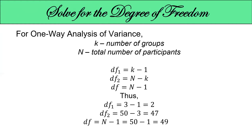In solving for the degrees of freedom, we have three: DF1, DF2, and DF total, each with their respective formulas. For DF1, we get 2 because socioeconomic status has 3 groups, so 3 minus 1 equals 2. DF2 is 50 participants minus 3 groups, which equals 47. The overall DF is 50 minus 1, which equals 49. This is for socioeconomic status. For year level, the values are 3, 46, and 49.